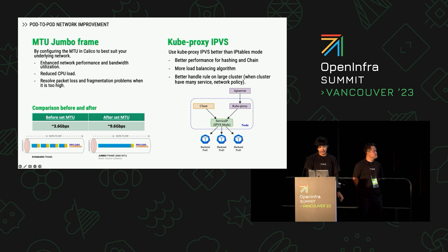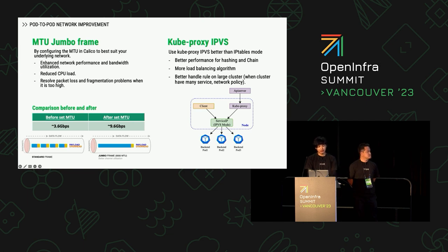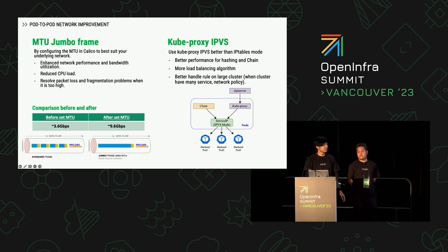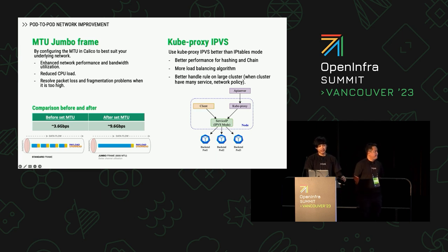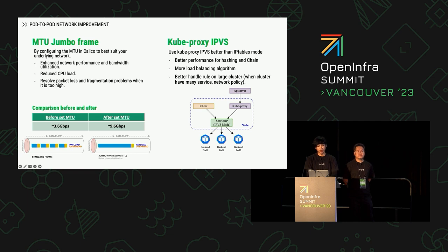The second consideration is kube-proxy mode. In the Calico documentation, it is recommended to use IPVS mode instead of iptables mode. IPVS specializes in load balancing technology, offering better performance in hashing and lower CPU usage. Additionally, it provides more load balancing algorithms. IPVS mode also handles more effectively in large clusters with many services and policies when updating new rule policies.